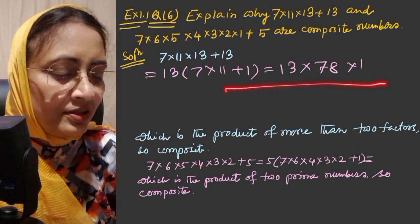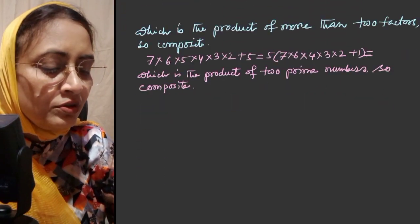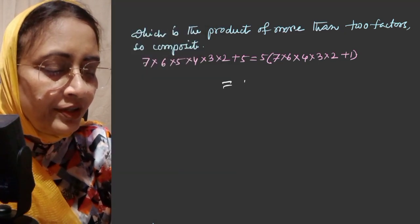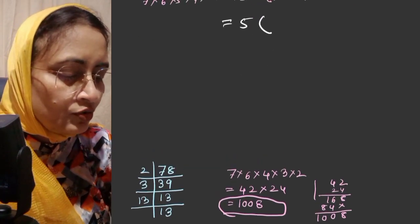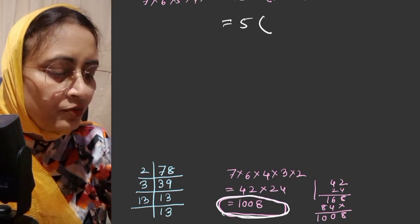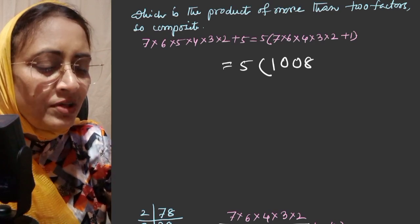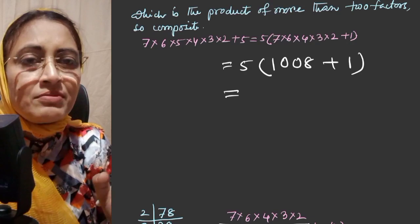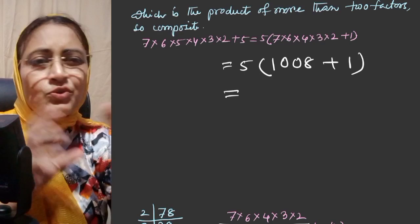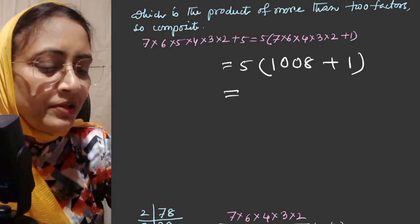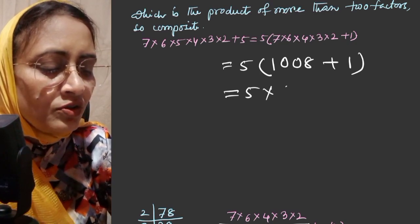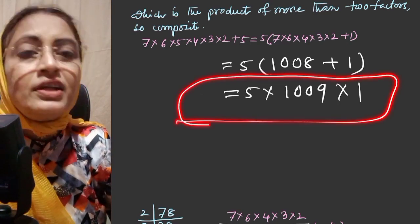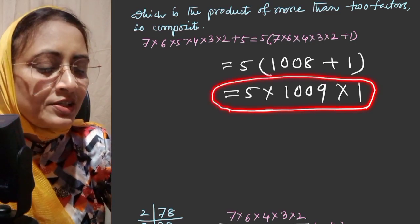The second one: 7×6×5×4×3×2×1+5. Taking 5 common, we get 5 into 7×6×4×3×2×1 plus 1. This multiplication equals 1008, so we have 5 into 1009, and also the factors 1 and the number itself. It is a composite number because it contains more than two factors. One and the number itself is a prime number, but this has more than three factors, so this is a composite number.